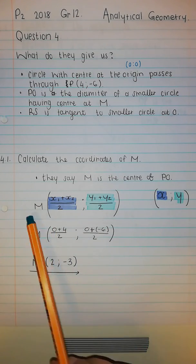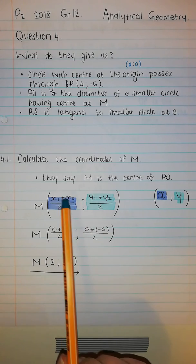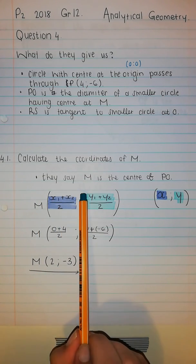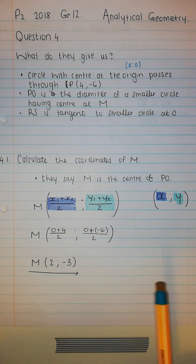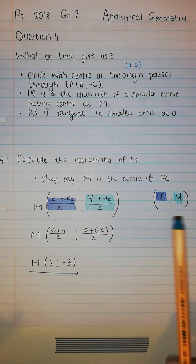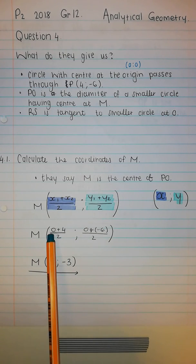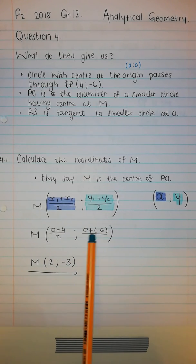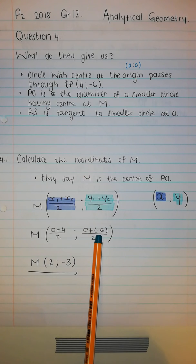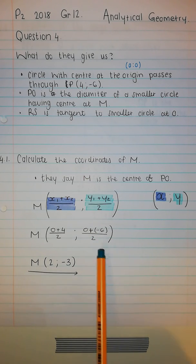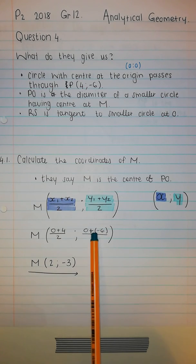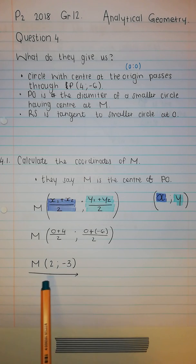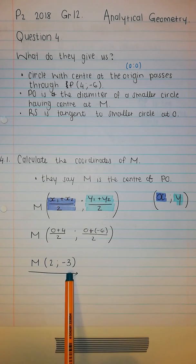We're going to use the straightforward midpoint formula and substitute in the two coordinates we already have. Please note: in this formula, one side is the x-coordinate and the other is the y-coordinate, so you don't have to substitute into something else. The first x is 0 and the first y is 0. Then for P, please don't make a sign mistake — y is negative 6. So 0 plus 4 over 2, and 0 plus negative 6 over 2, and M is going to be (2, -3).